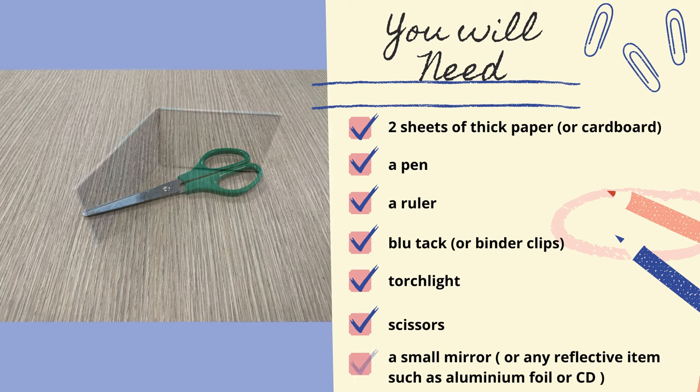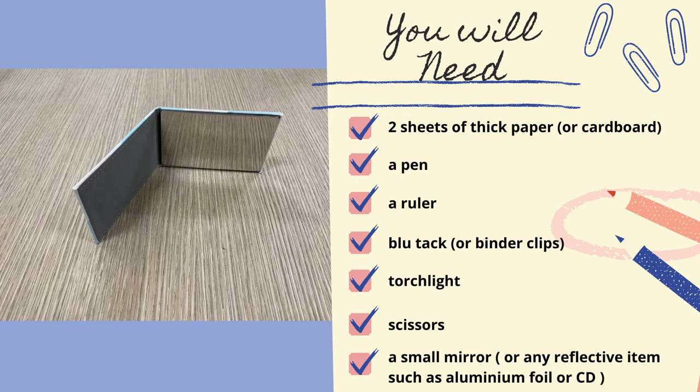And lastly, a small mirror. I'm using a compact mirror, which my mother uses for her makeup. But with her permission, of course. Thanks, Mum. If you don't have a small mirror at home, you can easily find something that's reflective. Perhaps some aluminium foil from the kitchen, or even the shiny side of a compact disc. If you don't know what a compact disc is, ask your parents. They probably have one or two lying around the house.